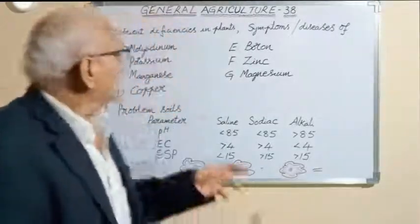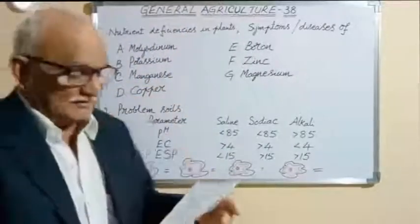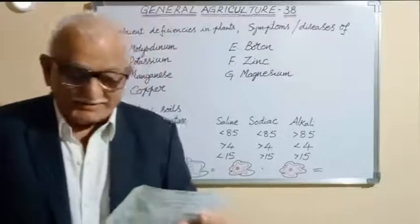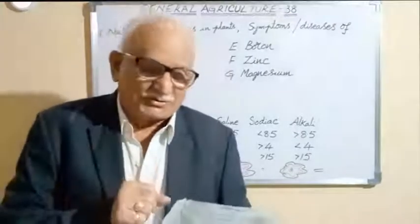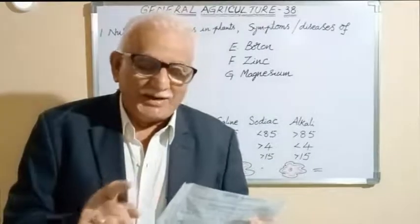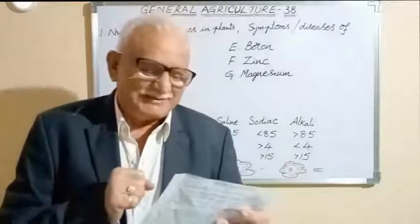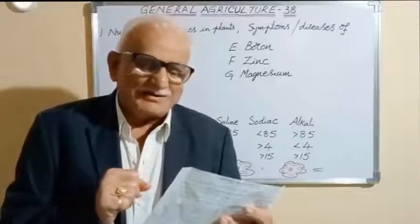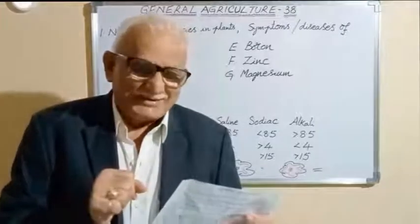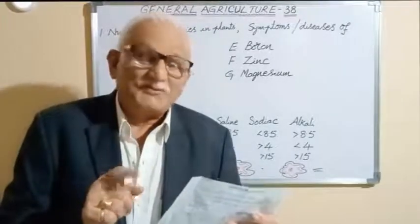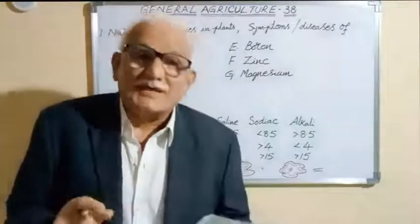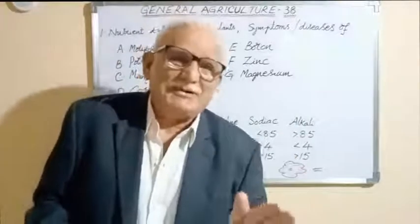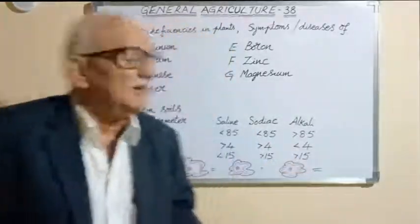The third one, manganese. As far as manganese is concerned: grey speck of oats, speckled yellows of sugar beet, marsh spots of peas, pahala blight of sugarcane, and frenching of tung trees are the deficiency symptoms or diseases of manganese.